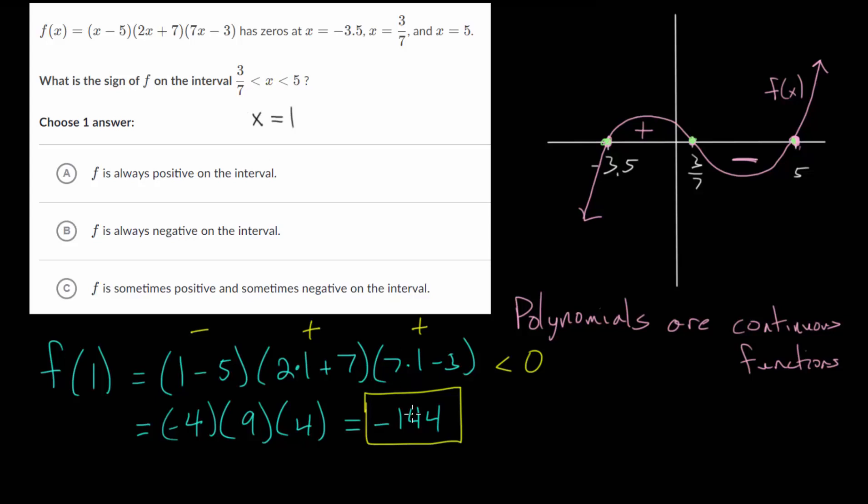But when it's just one interval between two consecutive zeros if we just plug in some value in the middle of it, if it's negative then the function is always negative on that interval which is what we have here. But if it was positive then the function is always positive on that interval.